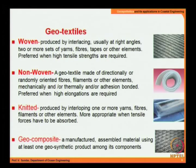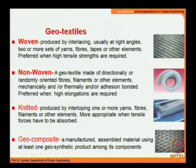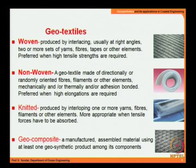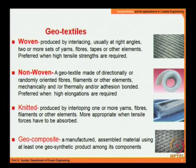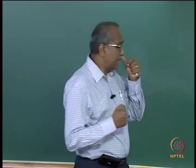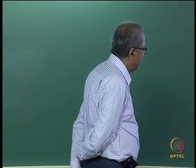Non-woven geotextiles are made of directionally or randomly oriented fibers, filaments, or other elements bonded mechanically, thermally, or through chemical bonding. The key difference from woven is that the fibers are randomly oriented. Non-woven geotextiles are preferred at locations where higher elongations are needed.